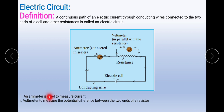An ammeter is used to measure current. Here in the circuit you can see an ammeter is used. It is named after the unit of current which is the ampere. So, an ammeter is an electric device which is used to measure current.